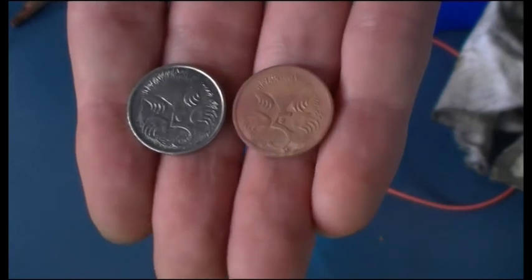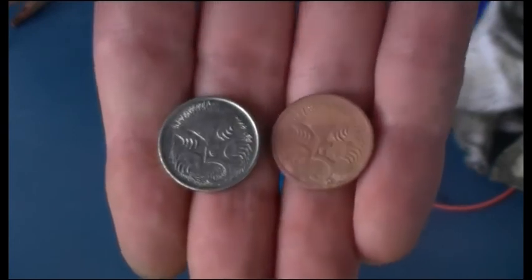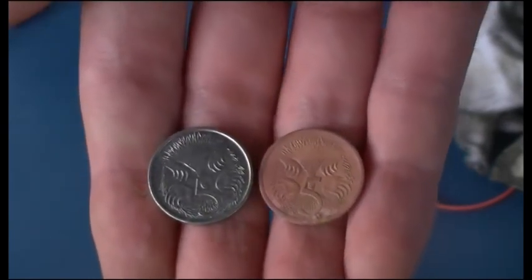Alright. So here you can really see the difference between the orange colour of the copper layer and the nickel layer on the regular five cent piece. Of course you can copper plate almost anything metal.